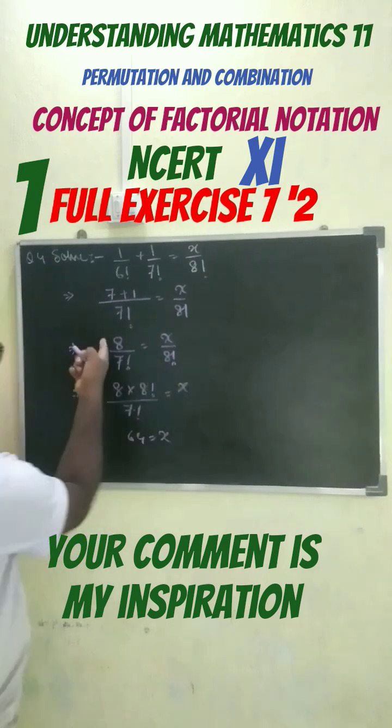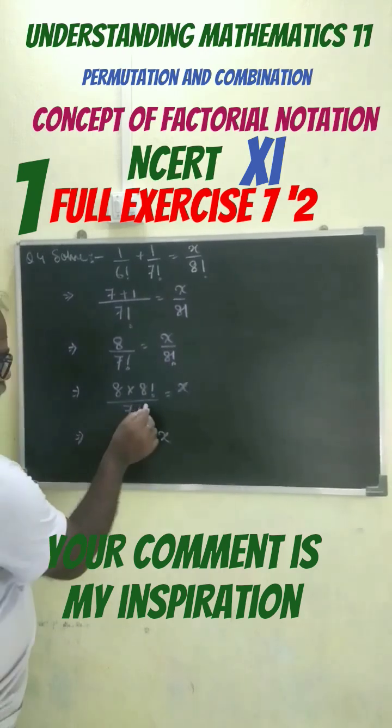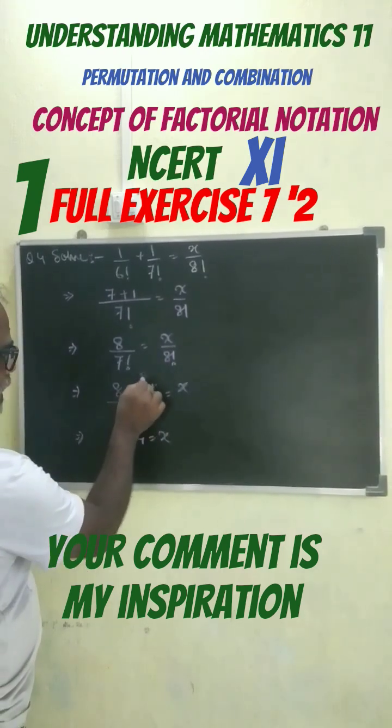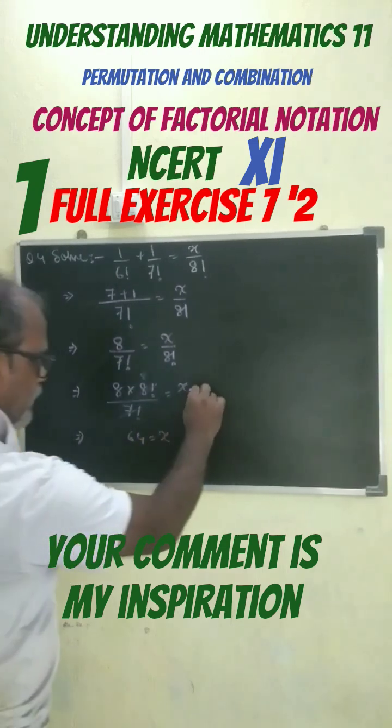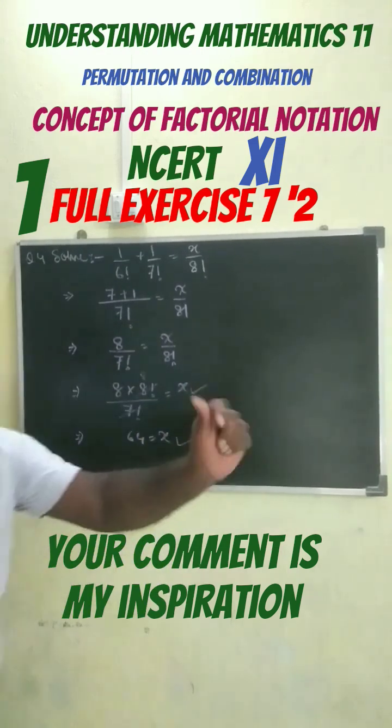...out the 8 factorial on this side. Now 7 factorial gets cancelled with 8 factorial, leaving 8. 8 times 8 equals 64, so x equals 64.